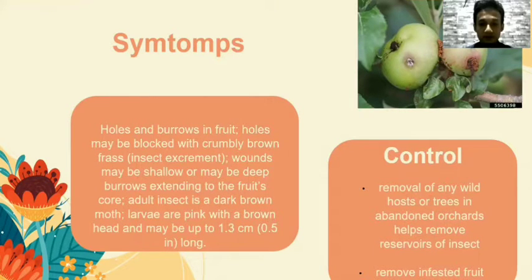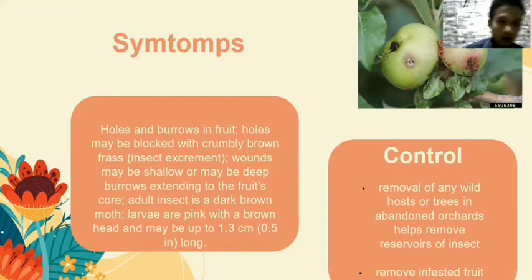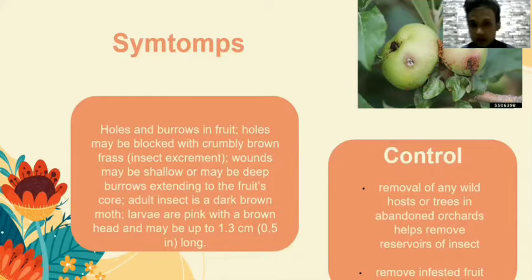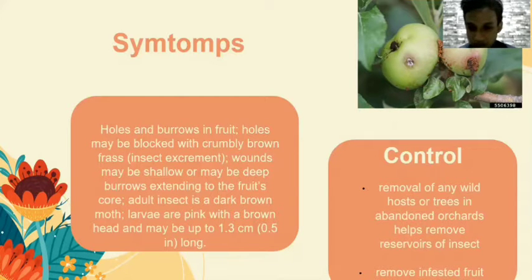The next pest is Cydia pomonella. The symptoms include: growth in the fruit may be blocked, which can cause the fruit to drop early or show insect damage. Once inside, the larva feeds through to the core. Larvae are pink with a brown head and may grow up to 1.3 cm. Control methods include removal of infested fruit, removal of infected wood, and removal of surface bark to expose insects. Infested fruit must be removed.